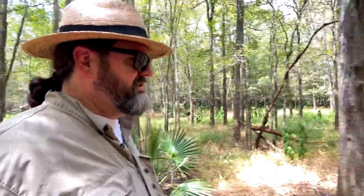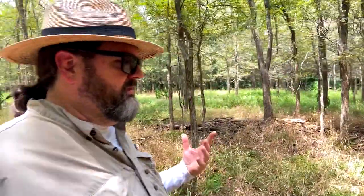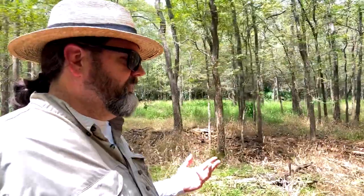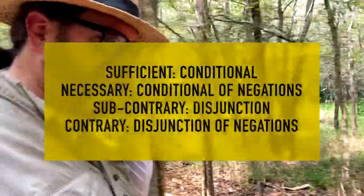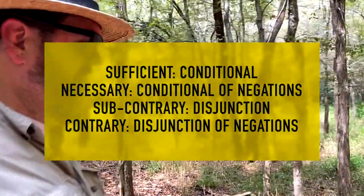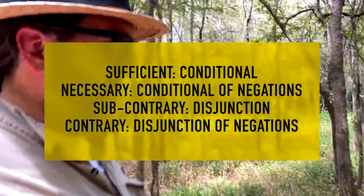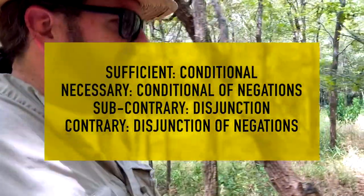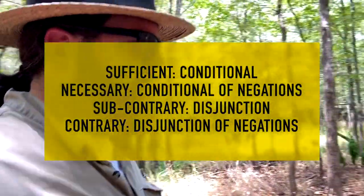So to summarize: we have four truth relations — sufficient, necessary, contrary, subcontrary — and which logical operator we use is determined by the truth relationship. Sufficiency uses a conditional. Necessity uses a conditional of negations. Subcontrary uses a disjunction. Contrary uses a disjunction of negations.